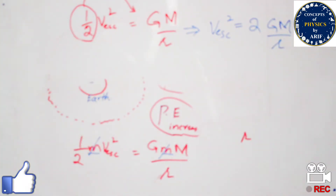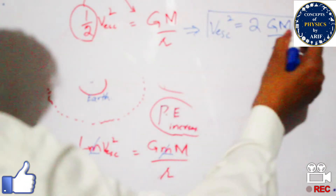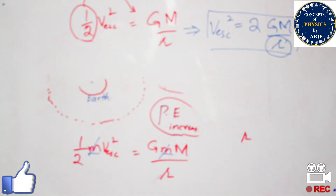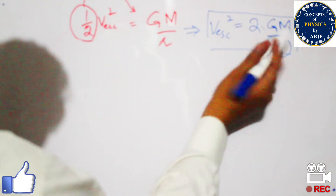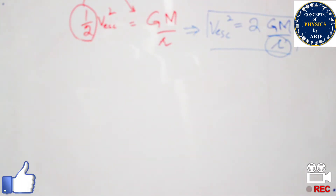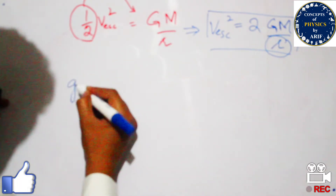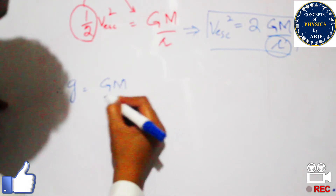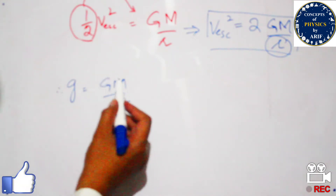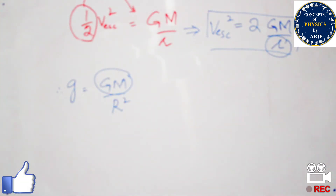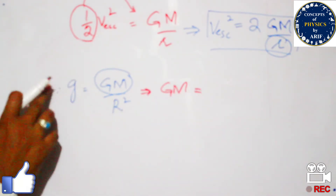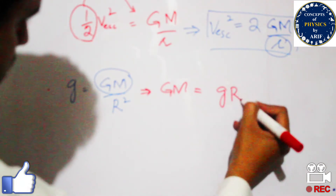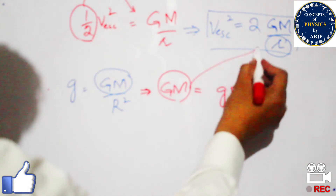This is not the final form because we do not know the value of r, the distance between the object and the surface of the earth. We know G (the gravitational constant) and M (the mass of the earth), but not r. To eliminate r, we use the expression g = GM/R², which gives us GM = gR².